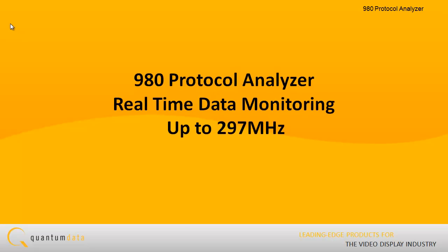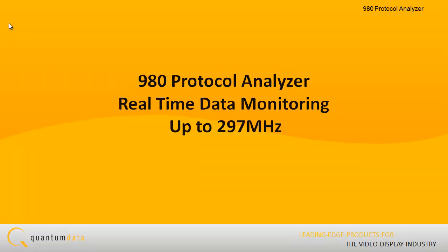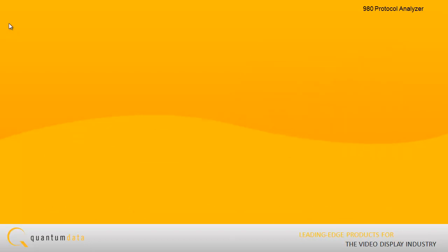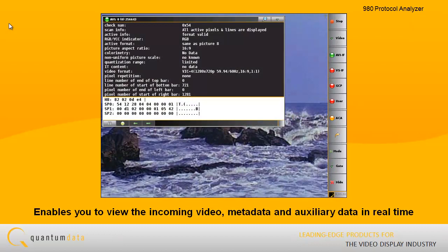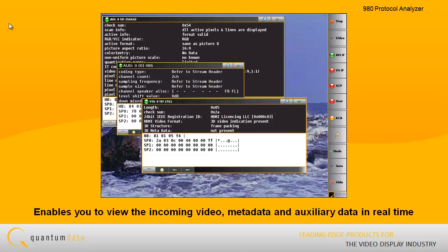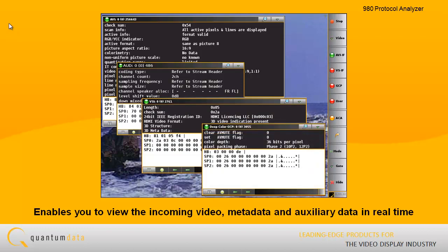The 980 Protocol Analyzer — Real-Time Data Monitoring — now running at speeds up to 297 MHz. The 980 offers important benefits for HDMI and MHL source testing. In addition to its interoperability and compliance test capabilities, the 980 enables you to view the incoming video, metadata, and auxiliary data in real-time.